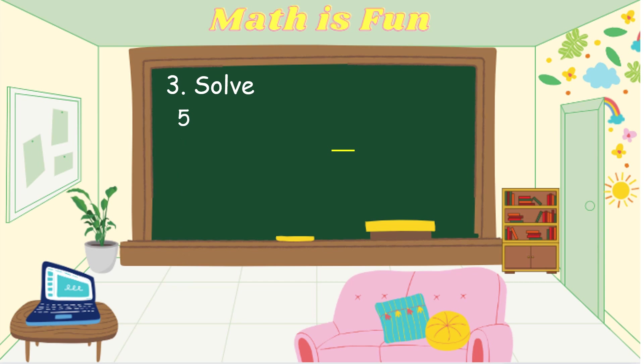Now we solve: 5 and 2 thirds plus 4 and 1 half. As we learned about adding mixed fractions, we separate the whole numbers from the fractions. First, we add the whole numbers: 5 plus 4 equals 9.